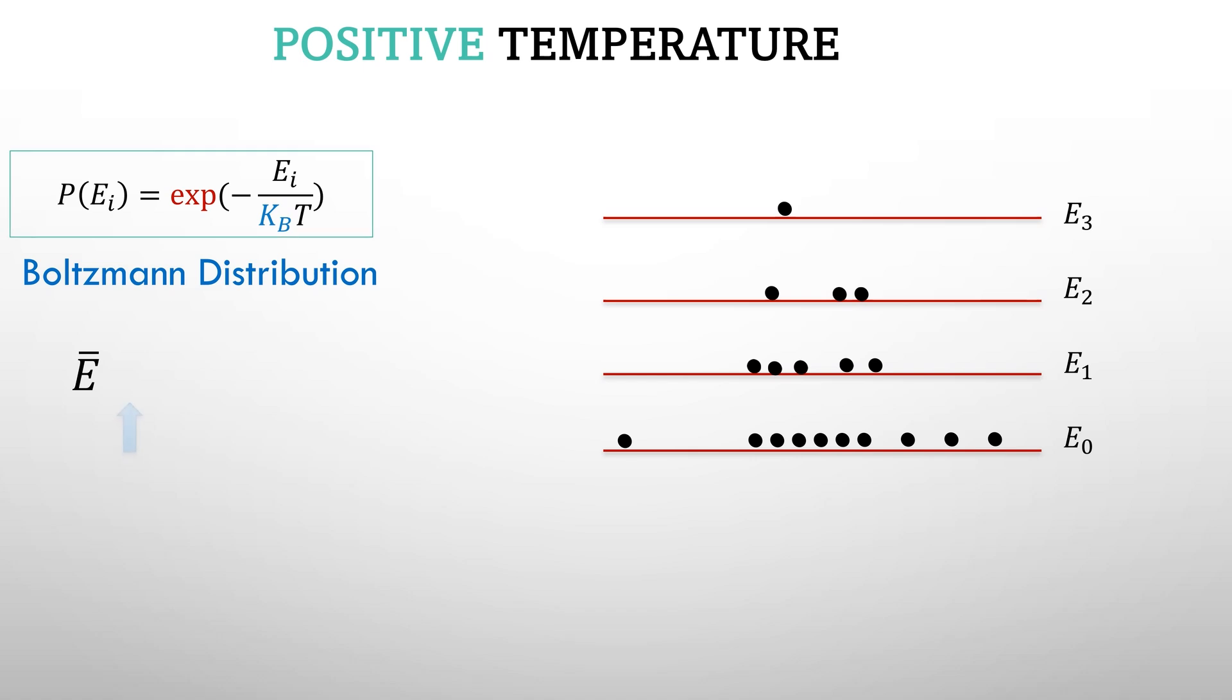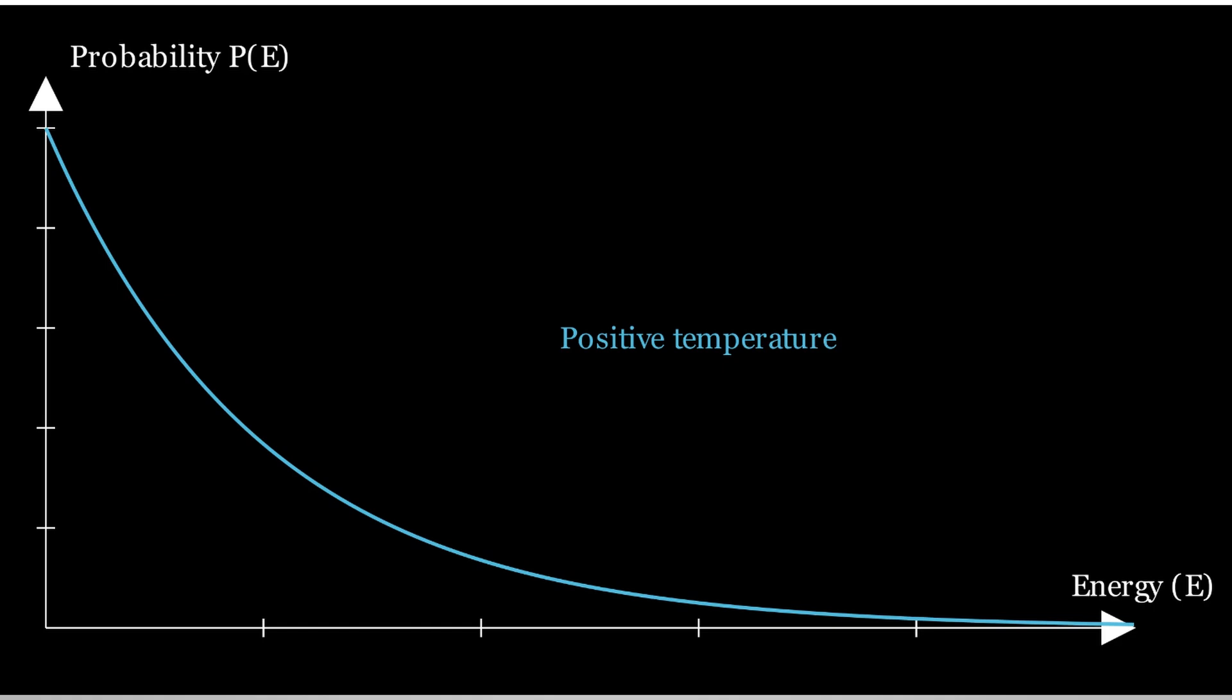If you keep on increasing energy by giving heat to the system, more higher energy states are available, but probability of occupation of higher energy states is exponentially less than lower energy states. That means you would still find more particles at lower energy states than at higher energy states because of Boltzmann distribution.